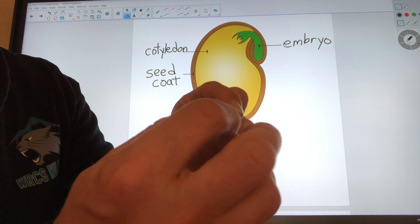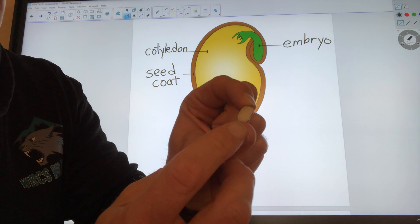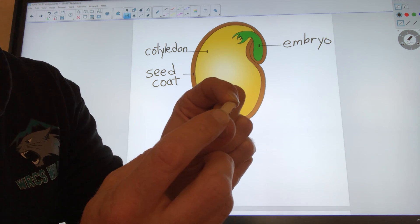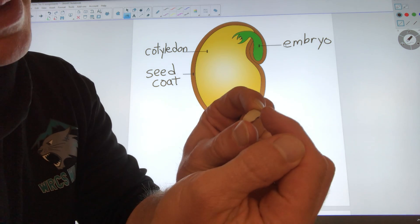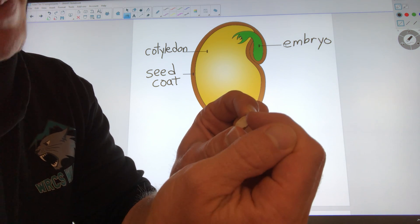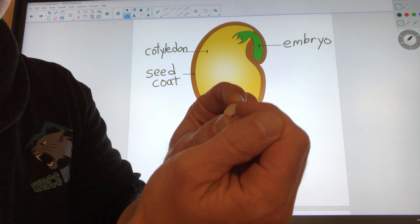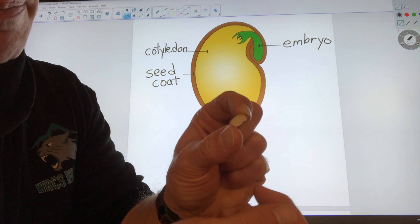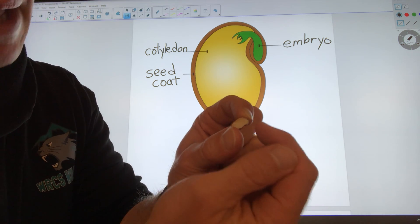This main part right here, all the cream-colored part, that's the cotyledon. That's the food for the embryo. And the embryo is this little tiny white speck right here. It's just maybe a millimeter long right now. Someday if I planted this seed, that little embryo would turn into a big bean plant.